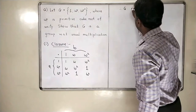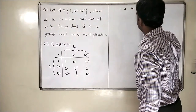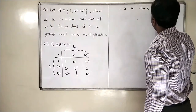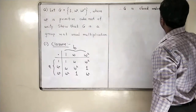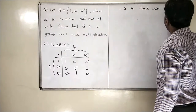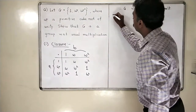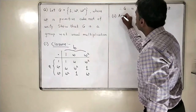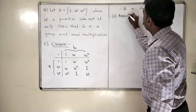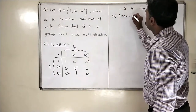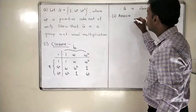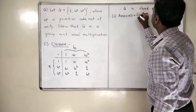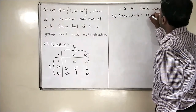Therefore G is closed under multiplication. The second property is associativity, which I will give as an exercise: check that (A star B) star C equals A star (B star C). Associativity can be checked.